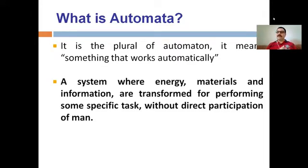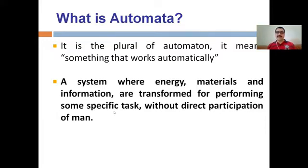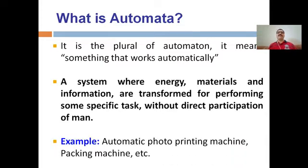The basic definition of automata is: automata can be considered as a system where energy, material, and information are transformed for performing some specific task without direct participation of men. Two key points here: first, the task must be well-defined; and second, without direct participation of men means the human being can design the system but not directly participate in it.